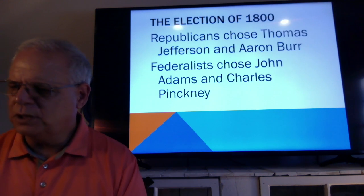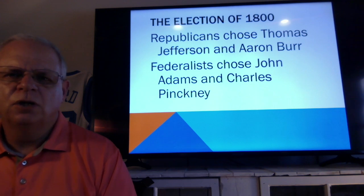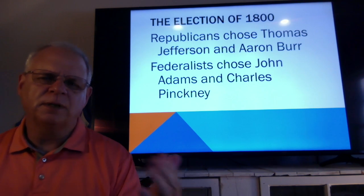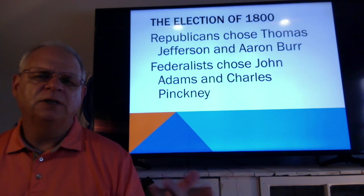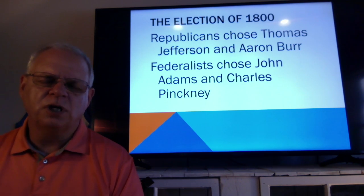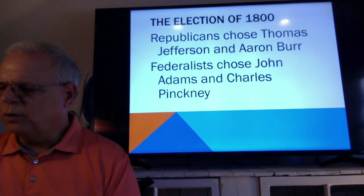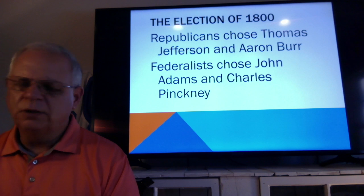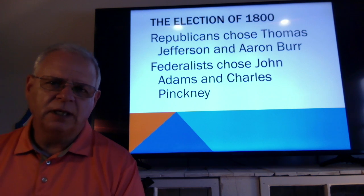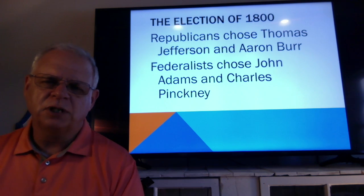In the election of 1800, the Republicans chose Thomas Jefferson, with Aaron Burr as his running mate. The Federalists chose John Adams and Charles Pinckney. Down the road in the next election it would be Jefferson again, but not choosing Aaron Burr — we'll see why in chapter 9. The Federalists would try another Pinckney relative.